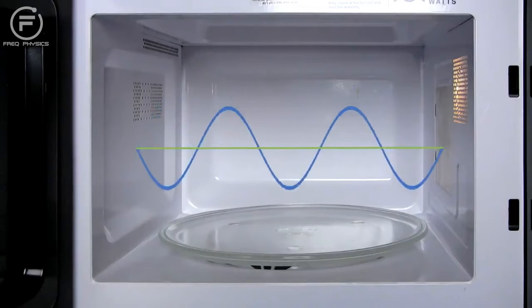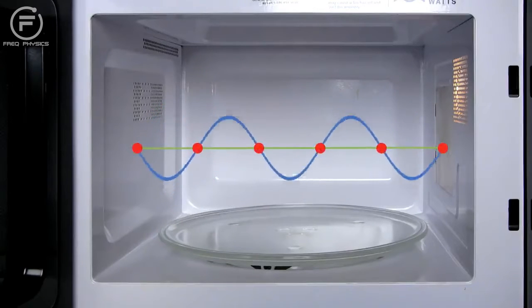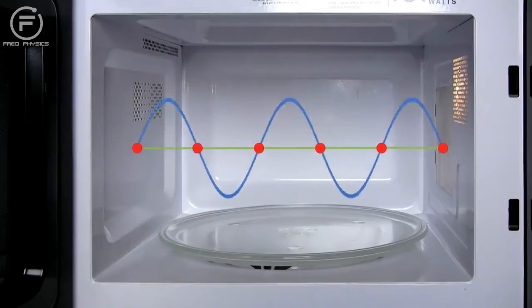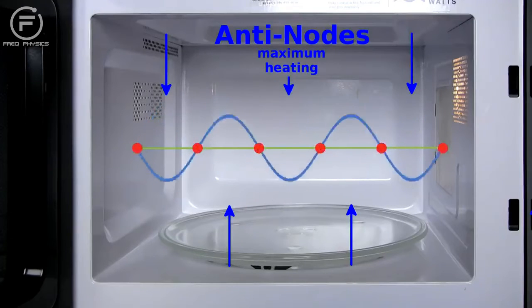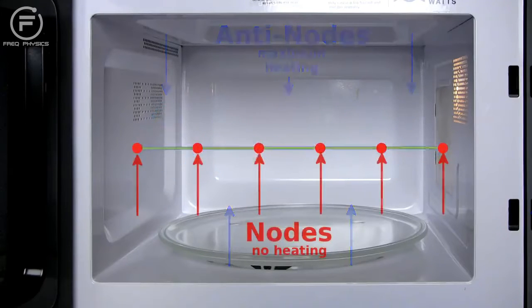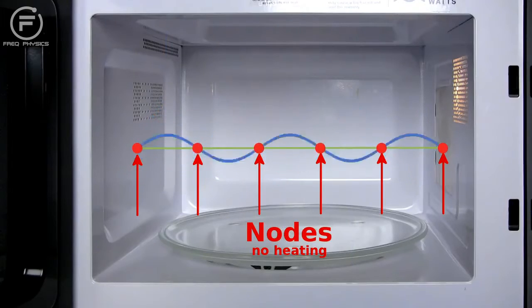The three-dimensional pattern of waves is difficult to predict, but the principle can be seen by looking at the waves in a single dimension. The peaks and valleys in the wave represent the greatest energy of the wave. Well, the nodes here correspond to the cold spots inside the chamber.